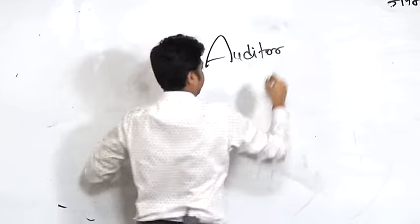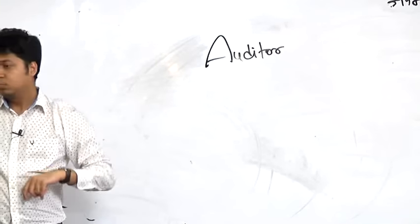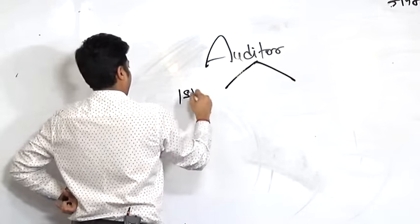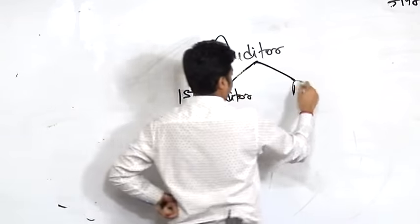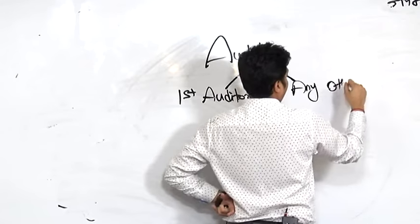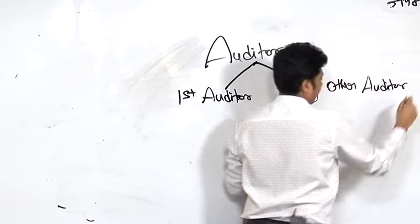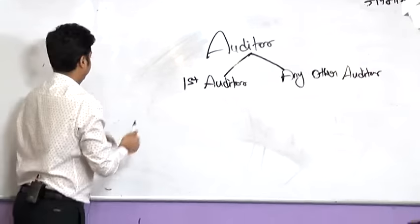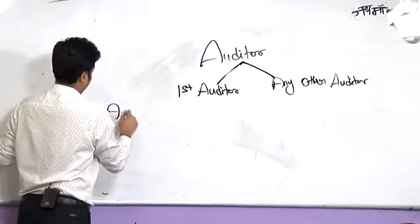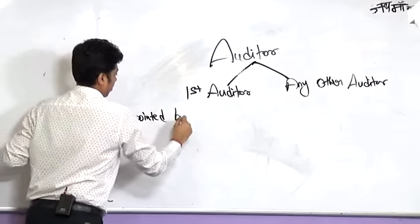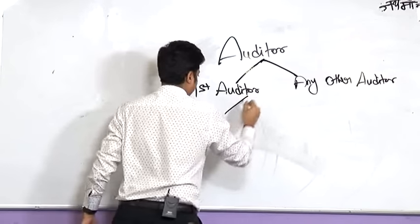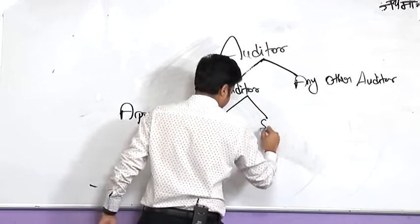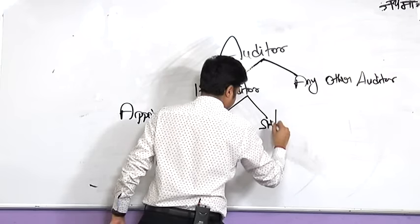Banate chaliyye. Auditor. Auditor ya toh first auditor hooga, ya phir abhe subsequent, any other auditor. Lick de raha hai abhe saram subsequent. Phir casual. First auditor, any other auditor. First auditor appointed by BOD.